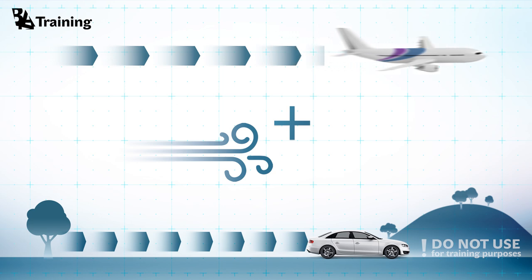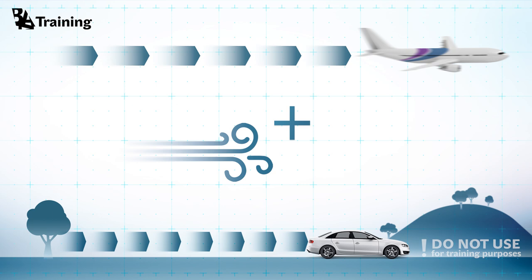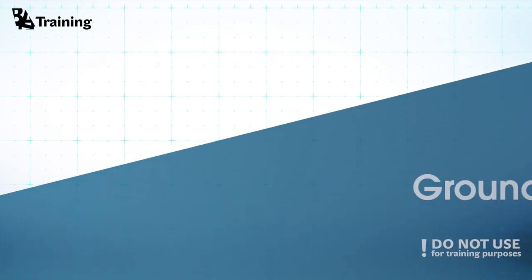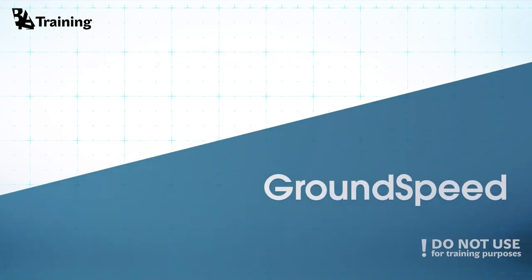You will travel further. Or in other words, your speed relative to the ground will differ from the speed relative to the air. In aviation, ground speed is expressed as GS.